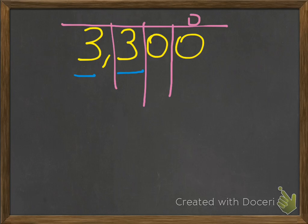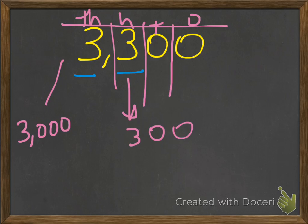You have your ones. And then your tens. And then your hundreds. And then your thousands. And again, this is really 300. Not 3. And this is really 3000. Not just a 3.